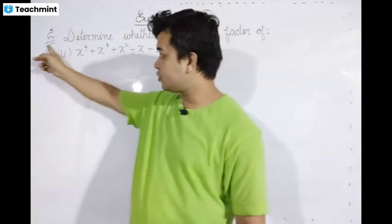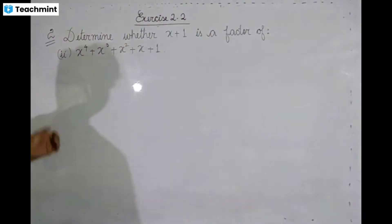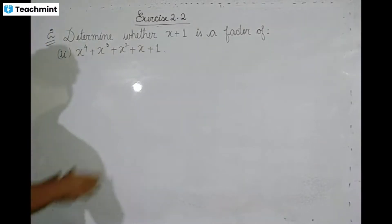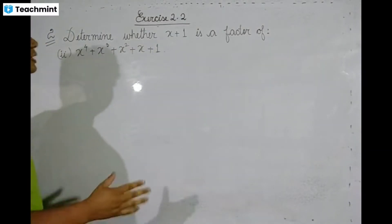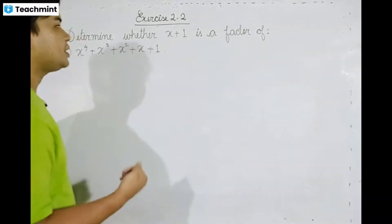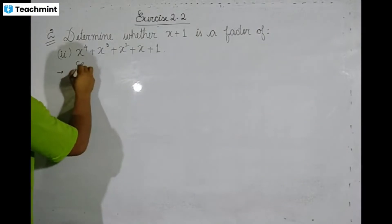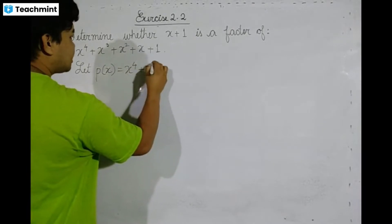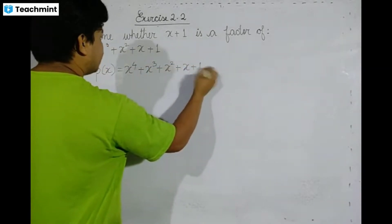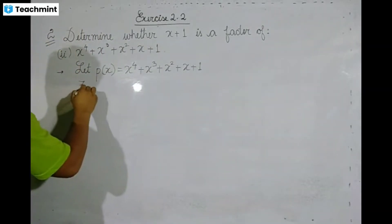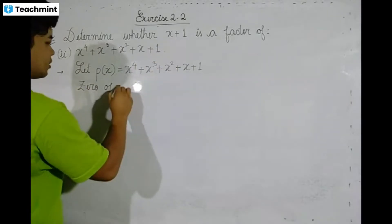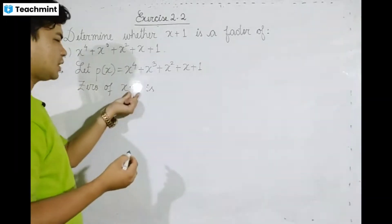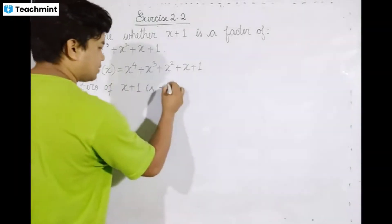Exercise 2.2, Question 2. We check if x plus 1 is a factor. Setting x plus 1 equal to 0, we get x equal to negative 1.